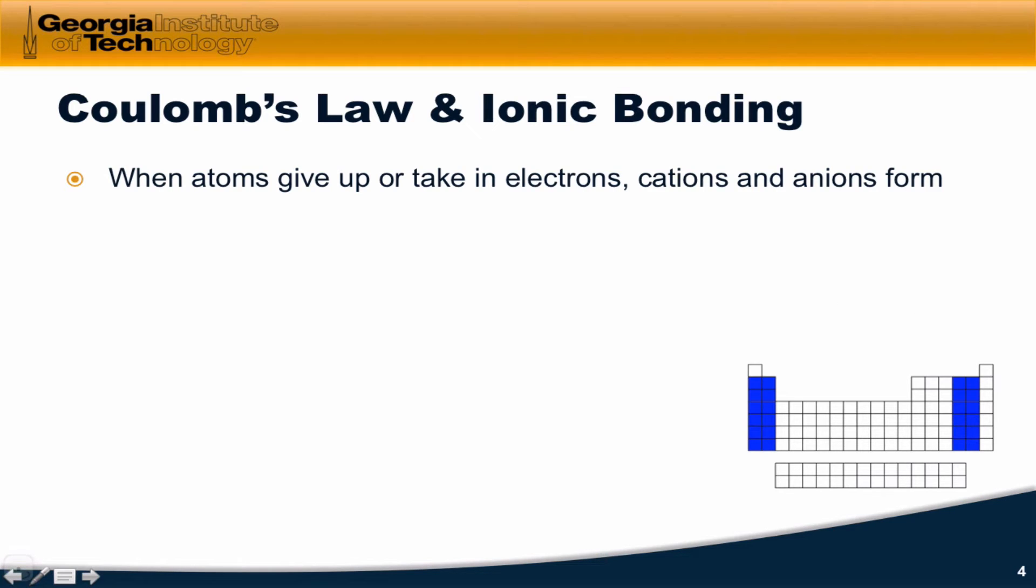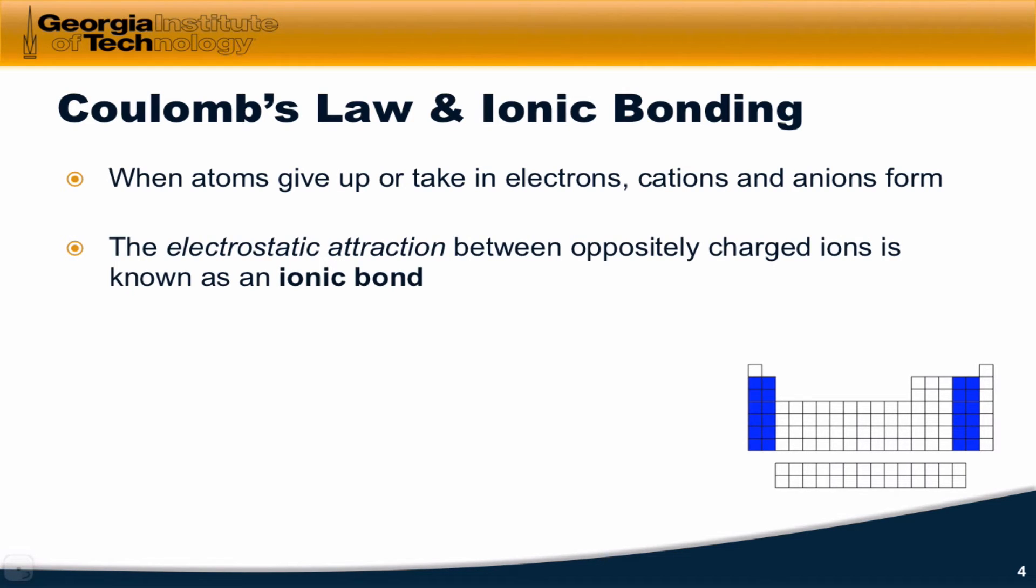So, like we just mentioned, when electron transfer takes place, when an atom gives up or takes in electrons, cations and anions form. And the electrostatic attraction between oppositely charged ions is what holds them together. And it's what's known as an ionic bond.